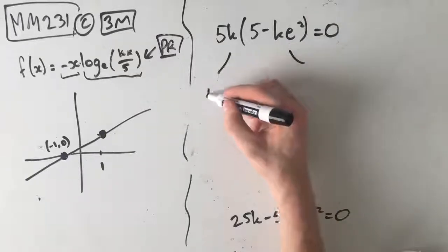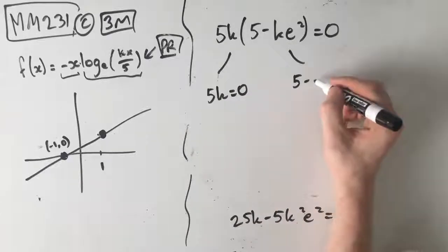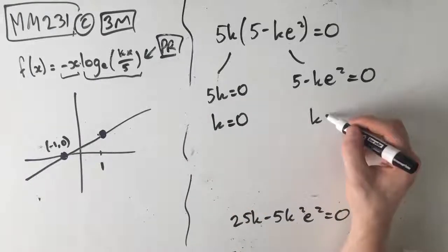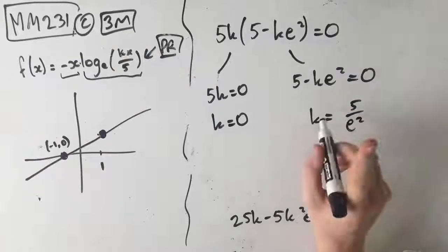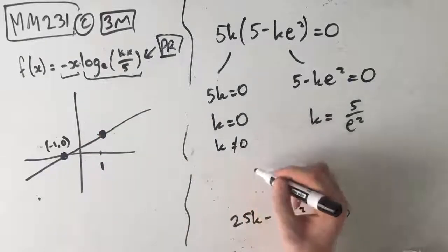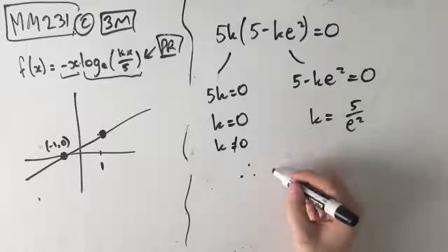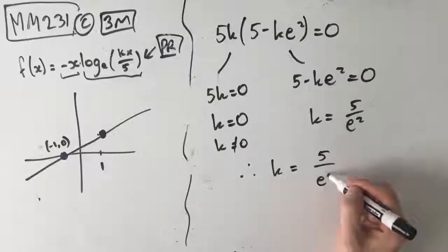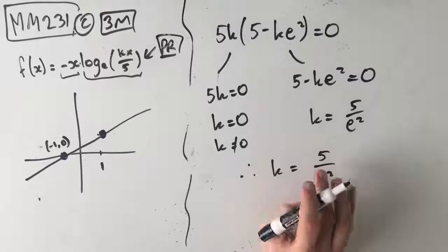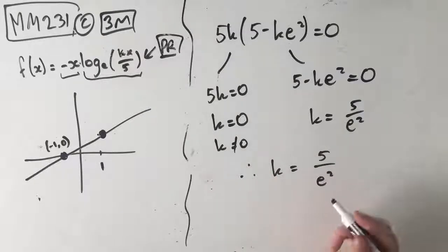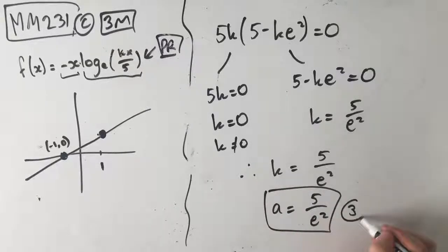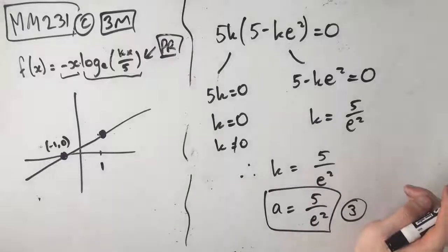By the null factor law, 5k equals 0 or 5 minus ke squared equals 0, giving k equals 0 or k equals 5 over e squared. But k cannot equal 0 because we can't have k equals 0 inside a log. Therefore k equals 5 over e squared. The question asked for a, so since k equals a, a equals 5 over e squared. This is your third and final mark.